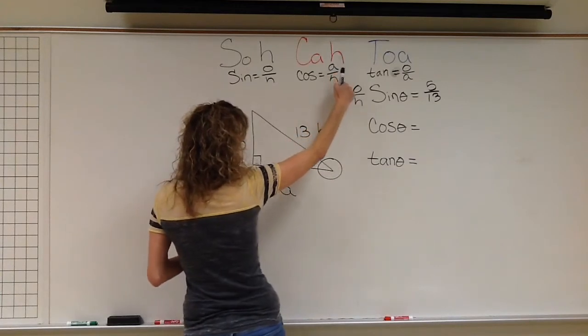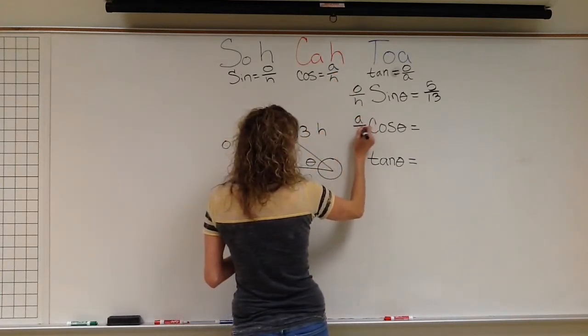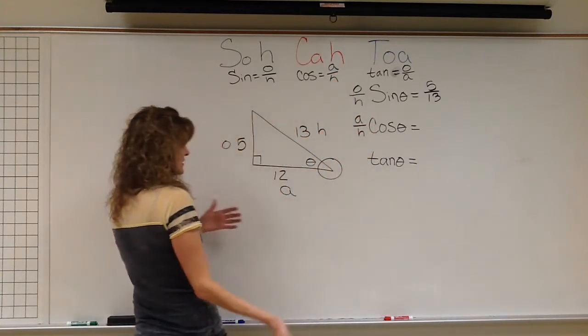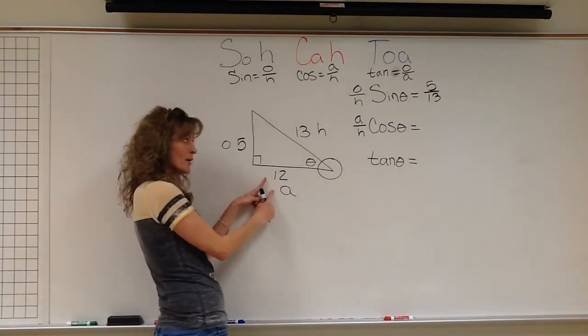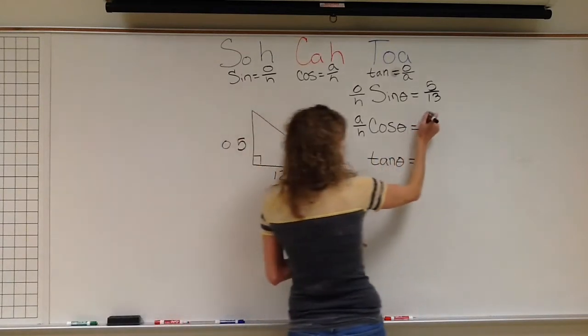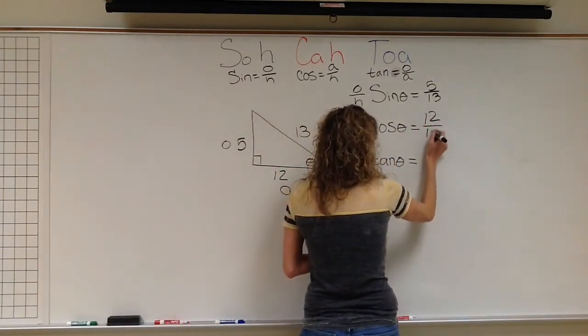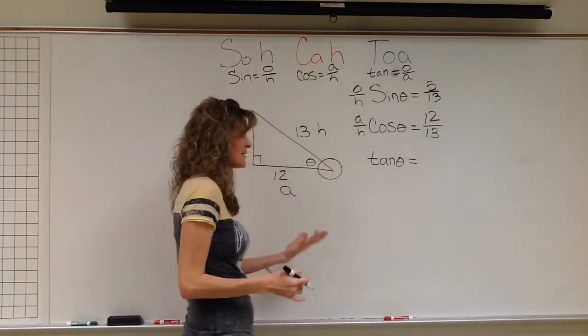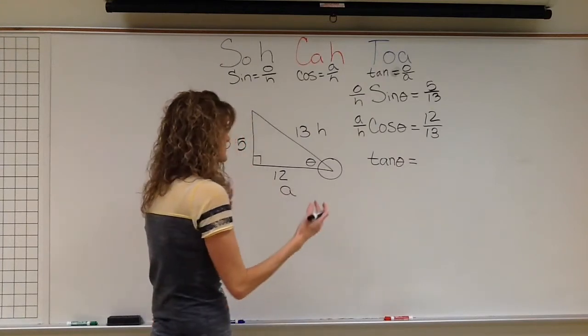All right. Cosine is adjacent over hypotenuse. So I'm going to come over here. Identify my adjacent is 12. And my hypotenuse is 13. So 12 thirteenths. And I'm going to make sure that that is reduced. And it is. It's in simplest form.